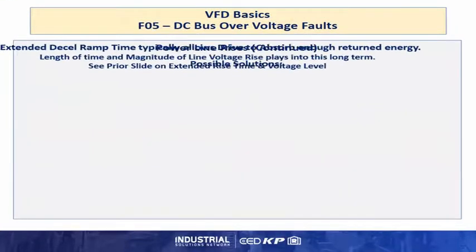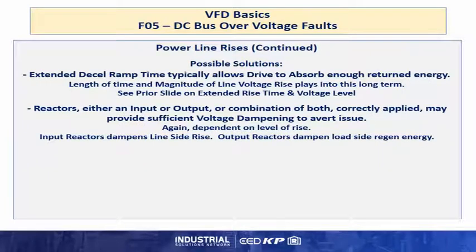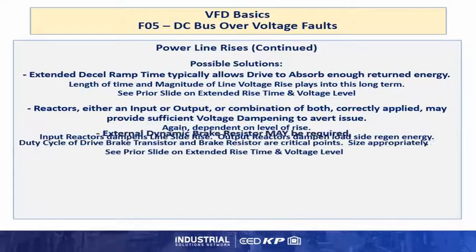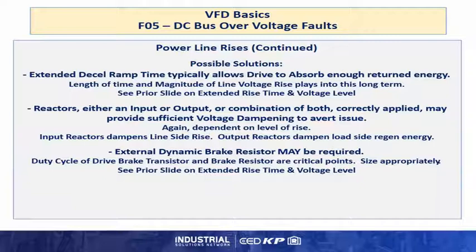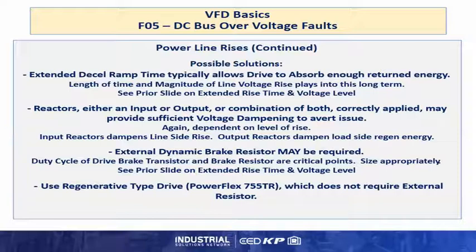Possible solutions to power line rises: extend the decel ramp. Reactors, either input or output, or a combination of both correctly applied may provide sufficient voltage dampening to avert the issue. A reactor typically drops the output voltage from its terminals by approximately its percentage of impedance if properly loaded; it is dependent on the level and time of the rise. An external dynamic brake resistor may be required, but the duty cycle of the brake transistor and brake resistor are critical points and must be sized appropriately to deal with constant on time. A regenerative drive does not require the external resistor and would return the power back to the AC line, which requires application considerations due to the design and install of the complete process.